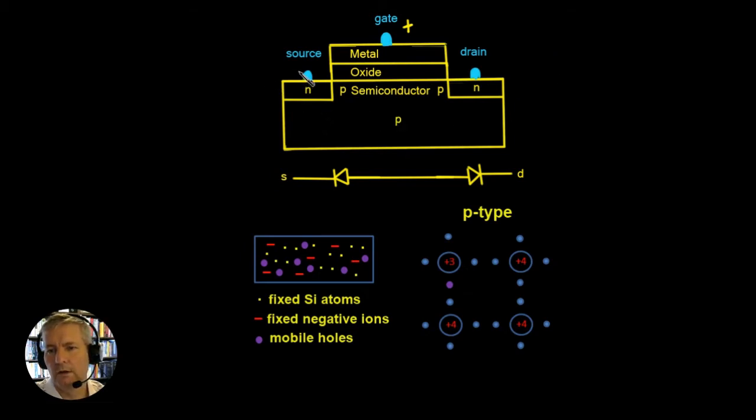But at the moment if we've got no voltage on this gate here the current won't flow through here because in effect what we're going to have is a reverse biased junction. So it doesn't matter how we change the source and drain voltage whether we make the source any more positive or less positive than the drain.